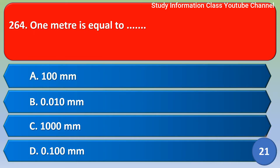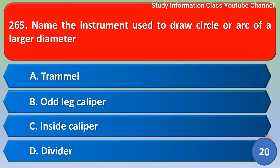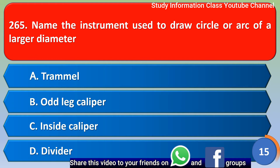Next question: 1 meter is equal to — Option A: 100mm, Option B: 0.010mm, Option C: 1000mm, Option D: 0.100mm. The right answer is Option C, 1000mm.